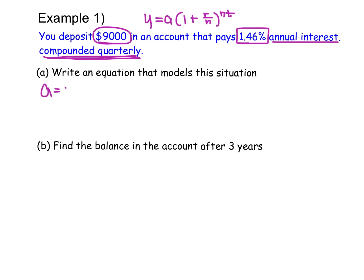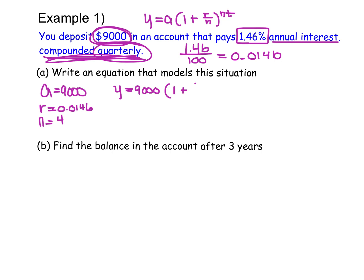I know to start off that my A value is equal to 9,000 because that's my starting value here that I can see. My R value is going to use that 1.46%. I need to take 1.46 and divide it by 100, so I get 0.0146. Then my N value, because it's compounded quarterly, quarterly means 4 times a year, so I have 4. And then my T value, I don't know just yet. I'll find that out in part B. So here we have the equation Y equals 9,000 times (1 plus 0.0146 divided by 4) to the power of 4 times T.